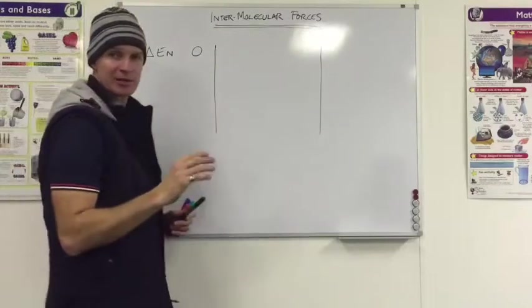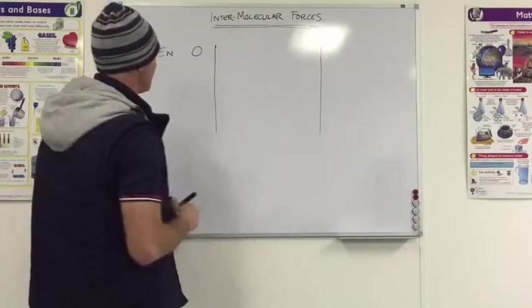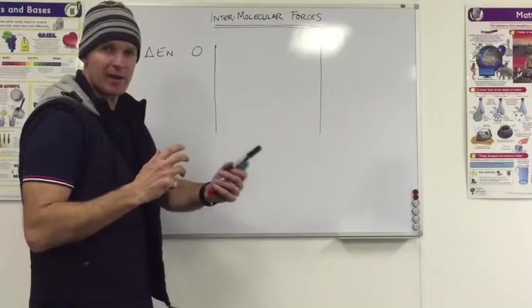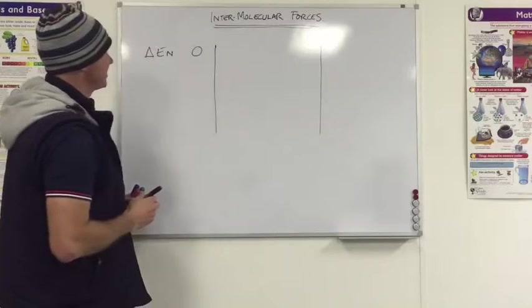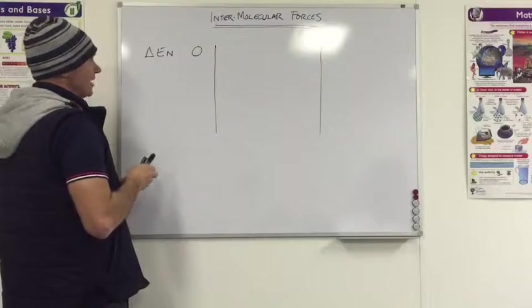If there's no difference in the electronegativities of the two molecules, like oxygen bonded to oxygen, or even carbon bonded to sulfur, where they happen to have 2.5, exactly the same, then it's a non-polar covalent bond.